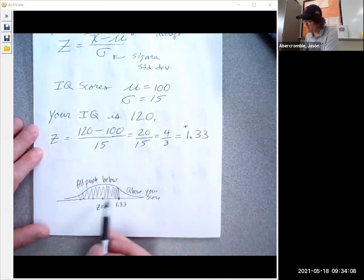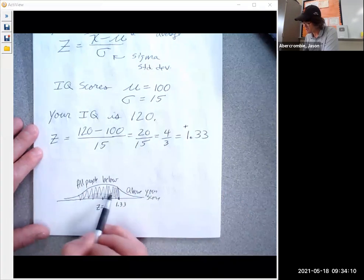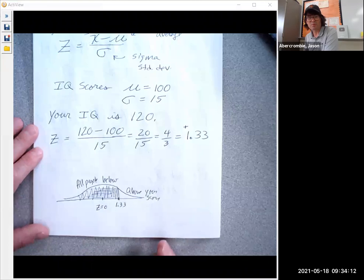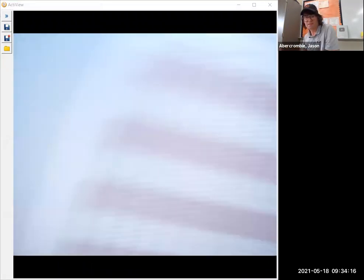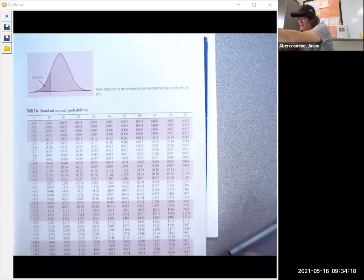So the way you figure out the area here of this region that's shaded is you look in a standard normal table for Z is 1.33. So I've got one right here—this is a standard normal table. I'm going to zoom in on it.